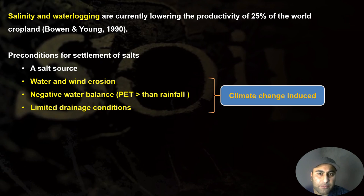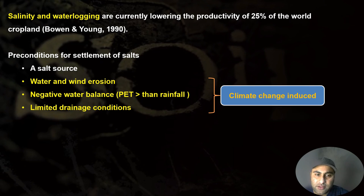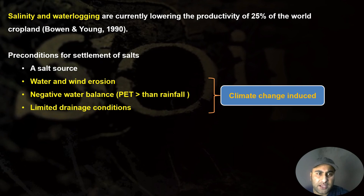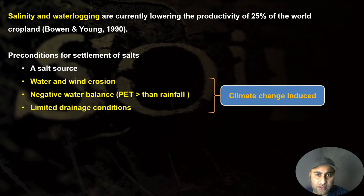Salinity and waterlogging are currently lowering the productivity of 25% of the world's cropland. Preconditions for the settlement of salts include salt sources, water and wind erosion, and negative water balance. Limited drainage conditions and negative water balance are both related to climate change. Such conditions, when initiated by climate change, lead to more salt concentration and waterlogging in soils. Altogether, salinity, waterlogging, increased bulk density, and altered porosity all decrease soil physical health. This was a brief overview of how soil health correlates with climate change.